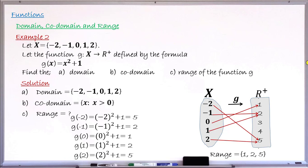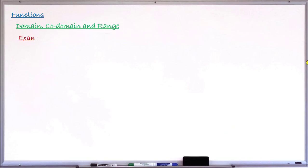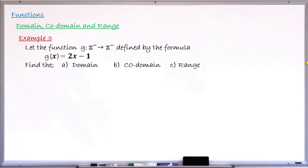Example number 3: the function g goes from the set of negative integers to the set of negative integers, and it is defined by g(x) = 2x − 1. The question asks to find: (a) the domain, (b) the codomain, and (c) the range. Looking at function g, it takes each and every element in the set of negative integers Z⁻ and assigns it to a single element in the set of negative integers Z⁻, defined by the formula 2x − 1.